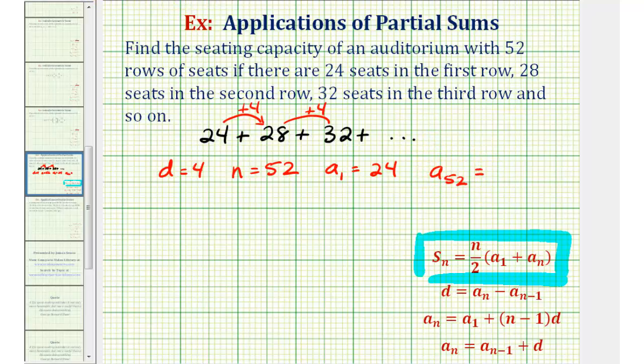To do this, we'll have to use this formula where for an arithmetic sequence, aₙ = a₁ + (n - 1)d. So let's go ahead and find a₅₂ and then we can find this partial sum.